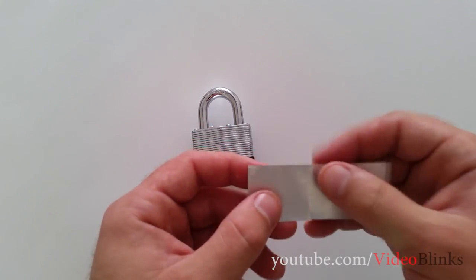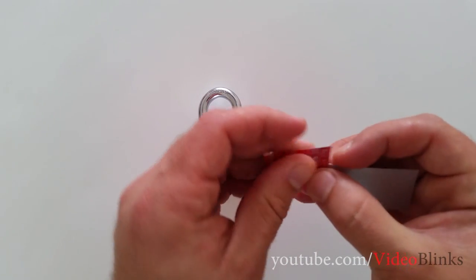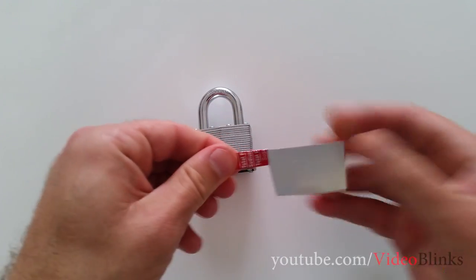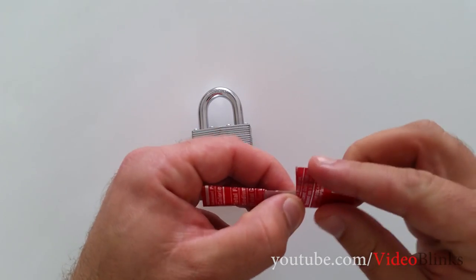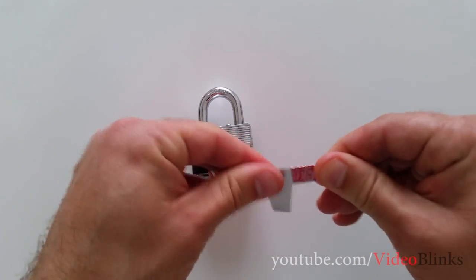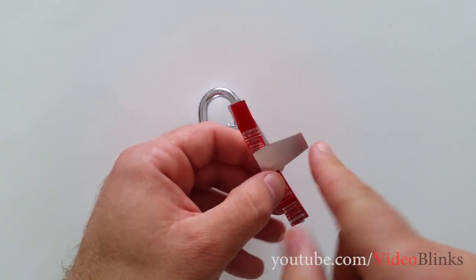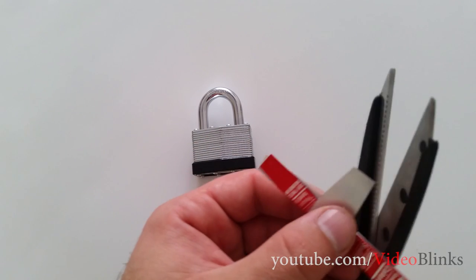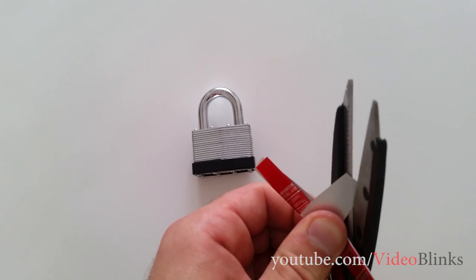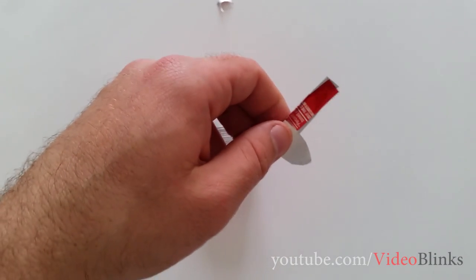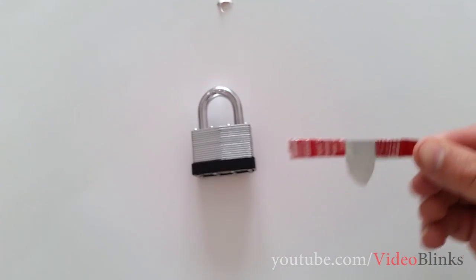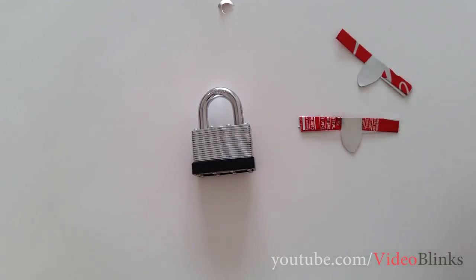Then we are going to take this part, put it up here, then we are going to roll this part. We are going to take this side as well, up, and roll it once again. Now we have to round this bottom part. So we have one, we have two.